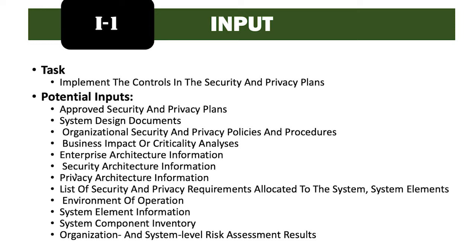Potential inputs for this task include the approved security and privacy plans, system design documents, organizational security and privacy policies and procedures, business impact or criticality analysis, enterprise architecture information, security architecture information, privacy architecture information, and a list of security and privacy requirements allocated to the system, system elements, and environment of operation.